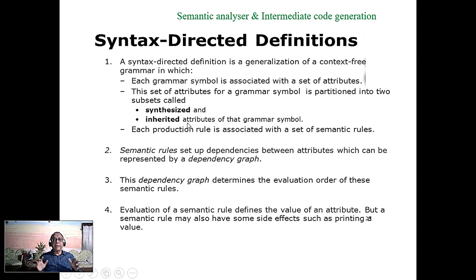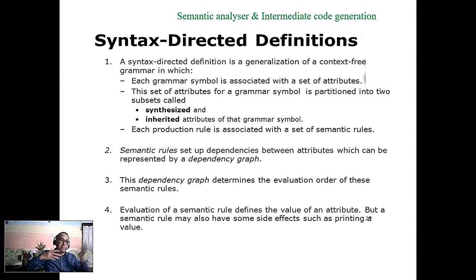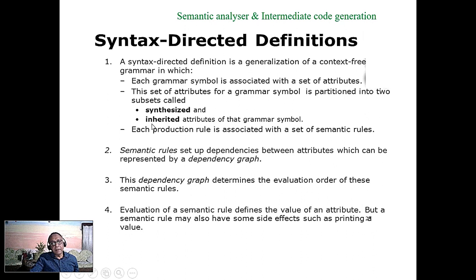Another kind of attribute is the L-attribute. It can be synthesized from the child and also from the parent and from the left siblings — but not from right siblings. These are called L-attributed. Mostly we have synthesized attributes, inherited attributes, and L-attributes, which are a mix of synthesized plus inherited from parent and left siblings.